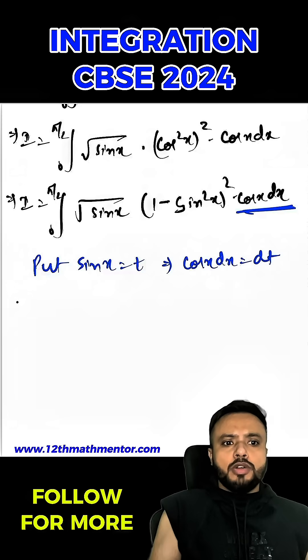So now, we have to find out the limit of t. Since x is equal to 0, so t will be equal to 0 and x is equal to pi by 2, then t will be equal to sin pi by 2 which is 1.